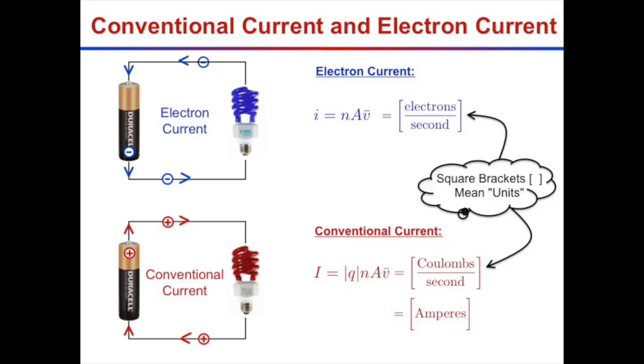Conventional current, written with capital I, is in terms of coulombs per second, sometimes called an ampere or amp. So if you've heard of currents in amps, that's what it is — coulombs per second.